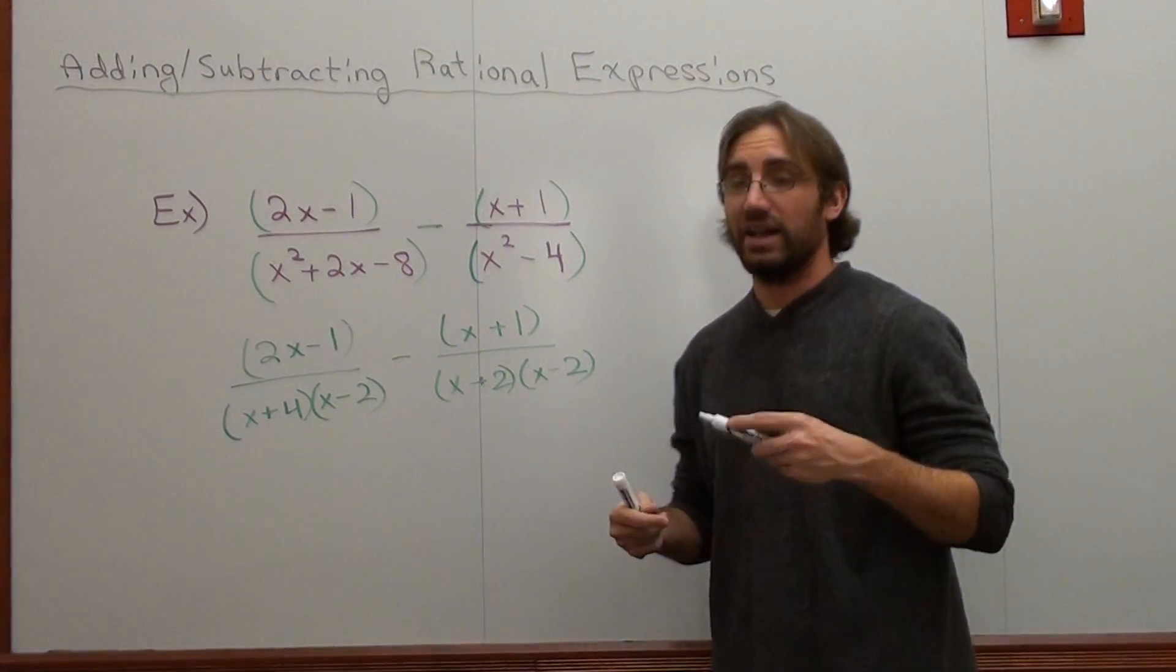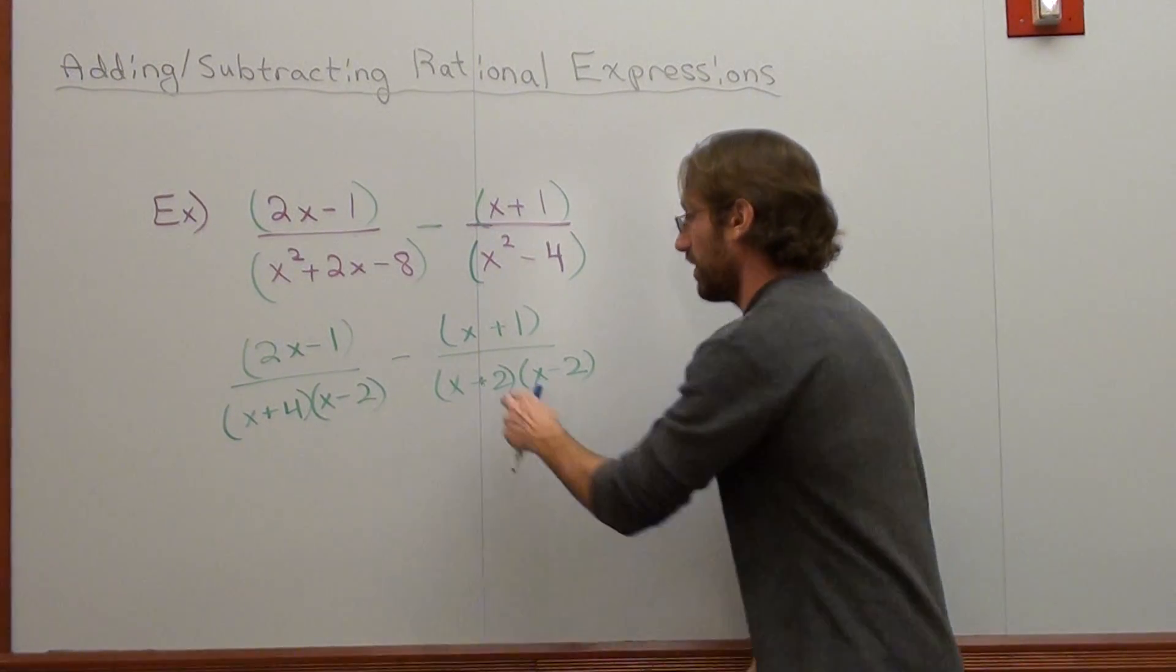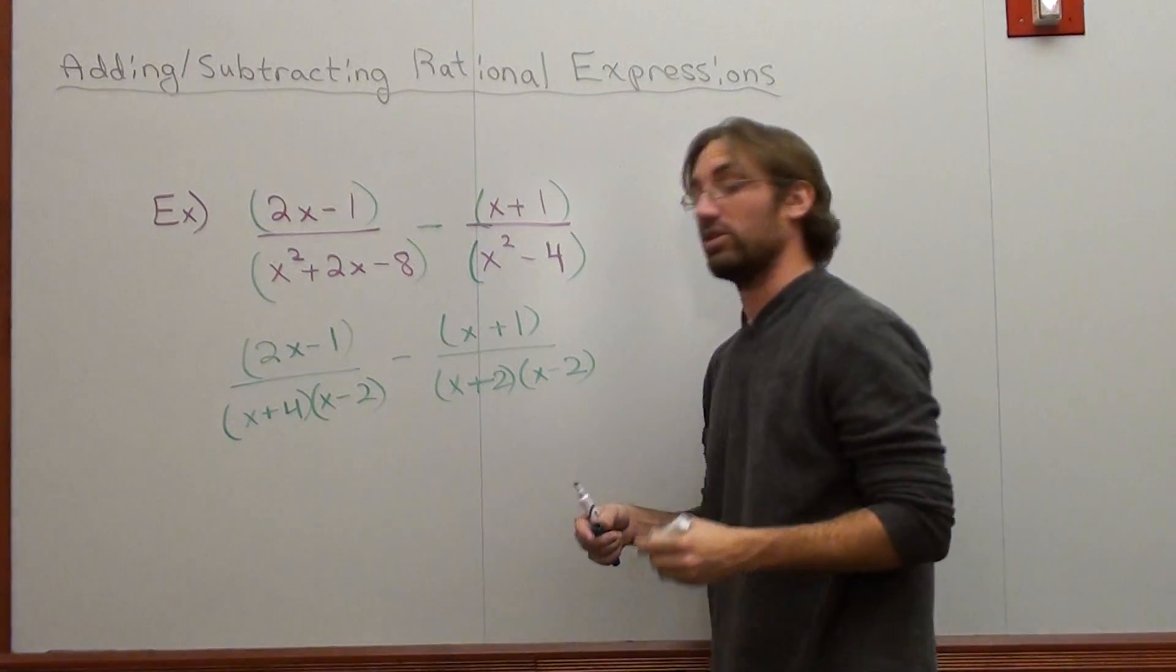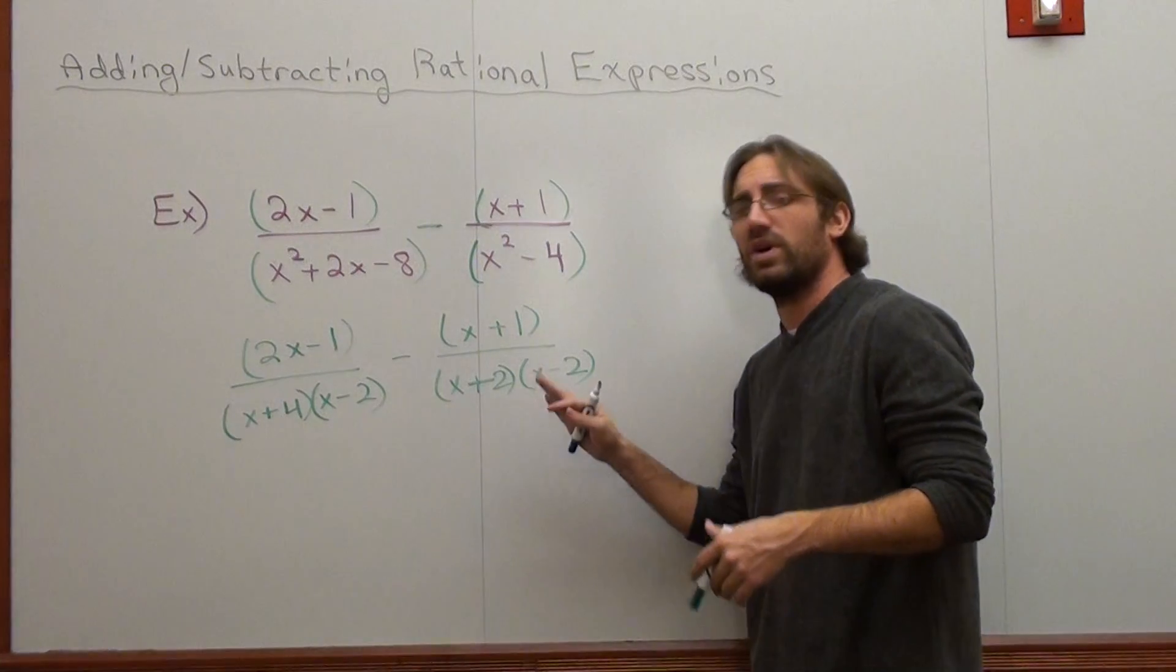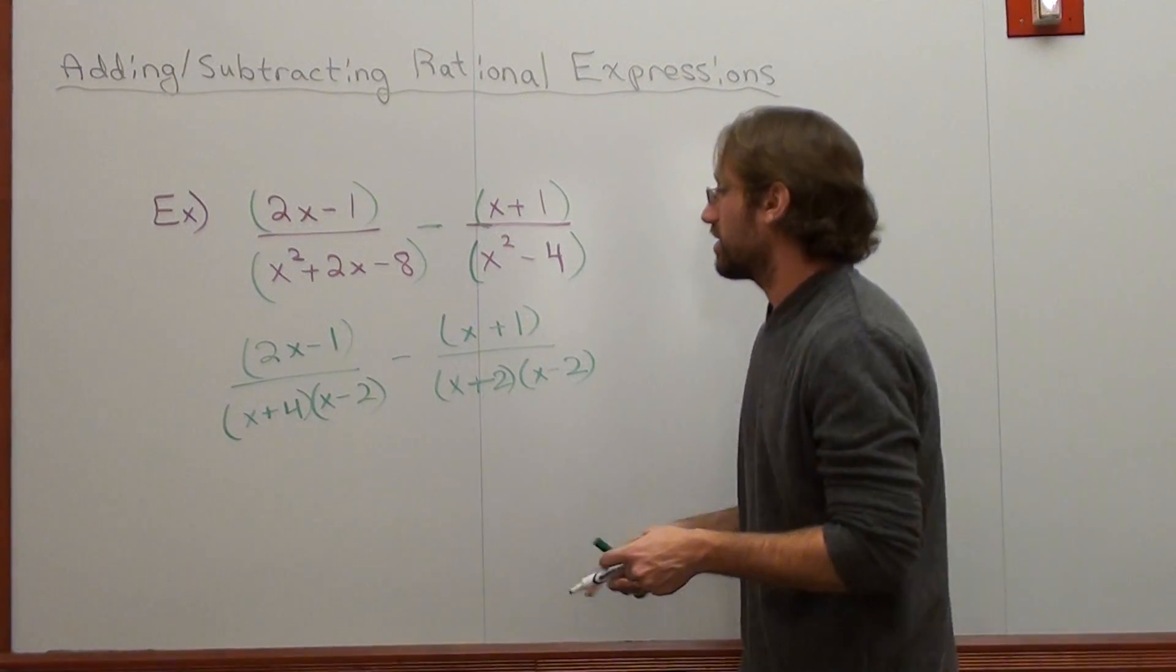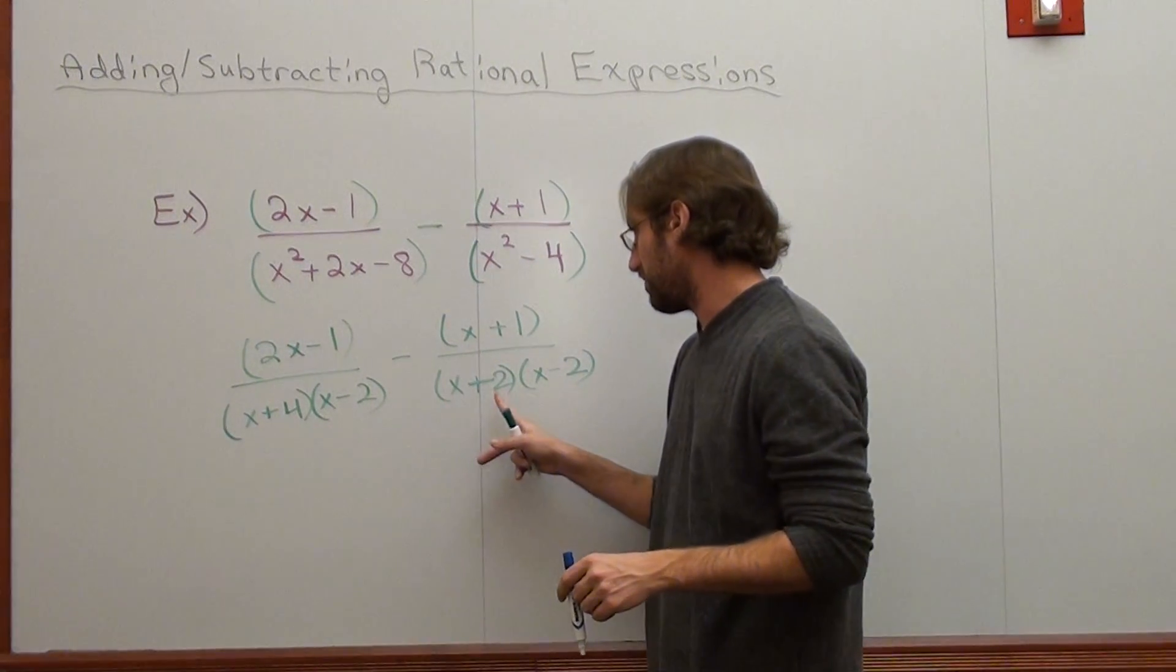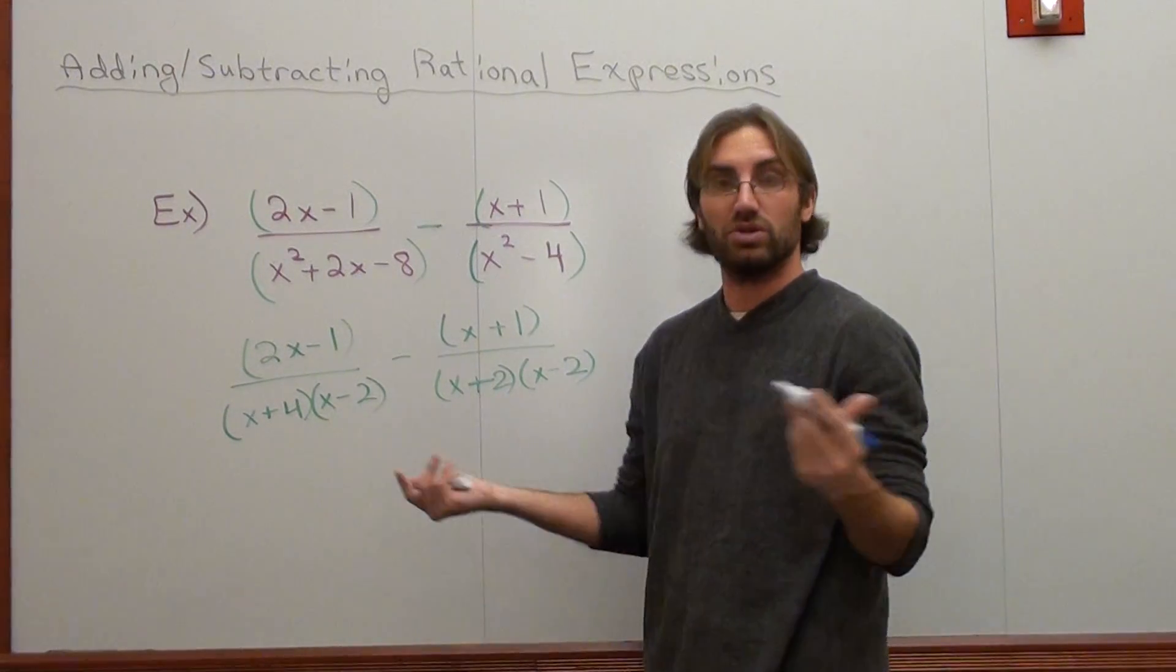Now I have this problem. Again, go back to the Napoleon Dynamite example that I talked about. What I do is I say, what does this denominator have that this one wants? So this has an x plus 4 and an x subtract 2. It has an x subtract 2, that's good. It doesn't have an x plus 2, so give it an x plus 2.